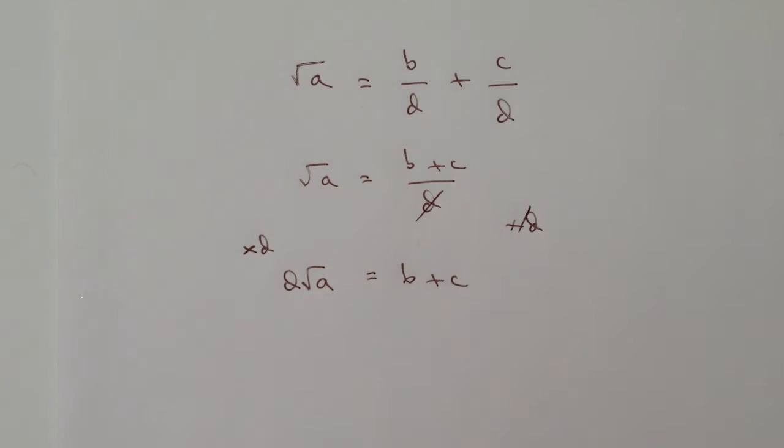The next thing to do now is to isolate C on its own. The way I'm going to do that is to get rid of this B by subtracting B from both sides.